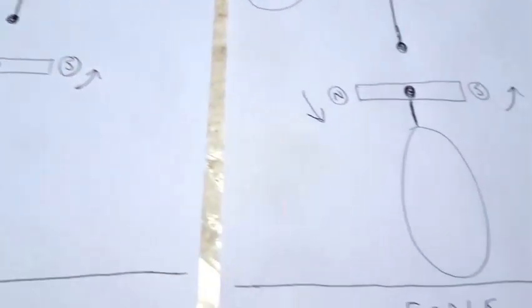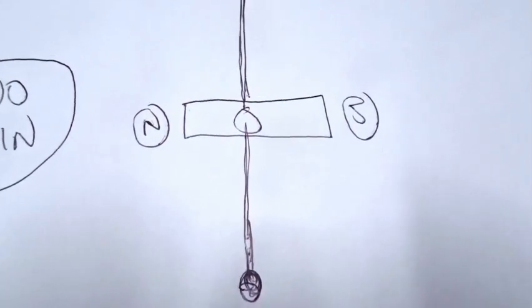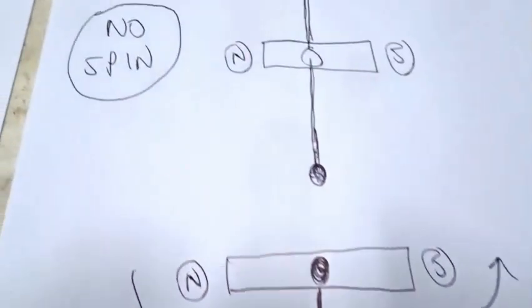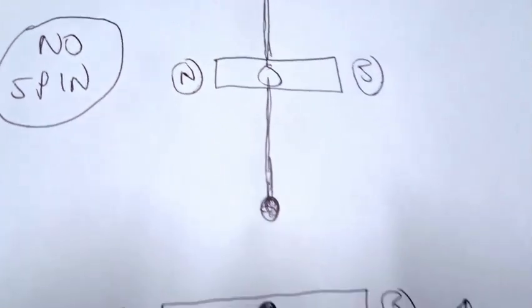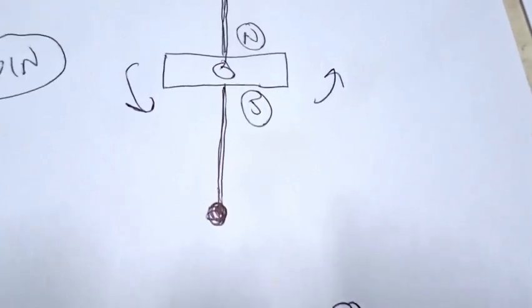Interestingly, if we have the same situation, a Dremel, and we use a horizontal magnet above rather than vertical, we get no spin whatsoever and no lift. So we have to have a horizontal magnet below, a vertical magnet above.